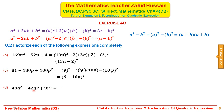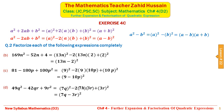For 49q² − 42qr + 9r²: this is the second identity form. 49q² is the square of 7q, and 9r² is the square of 3r. Writing (7q)² − 2(7q)(3r) + (3r)², in the first bracket we write 7q and in the second bracket 3r, giving factors (7q − 3r)².